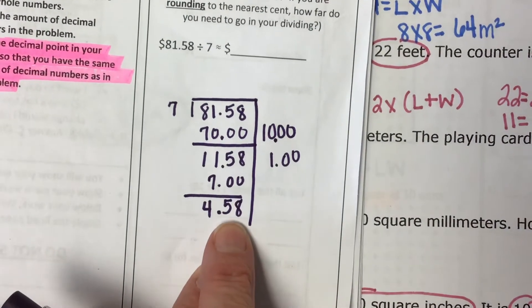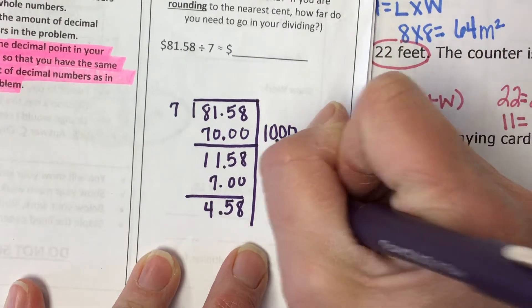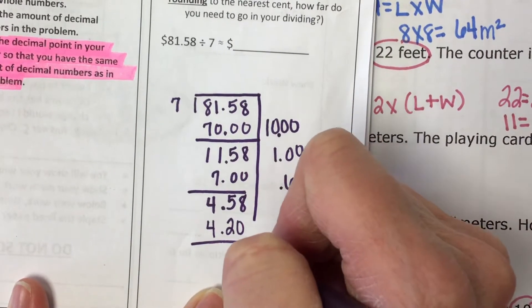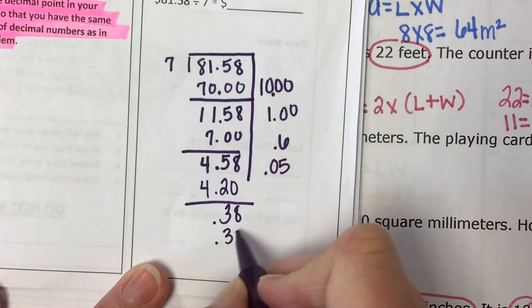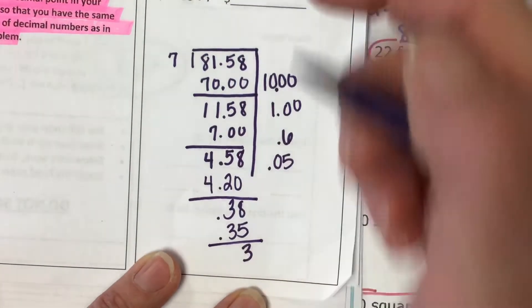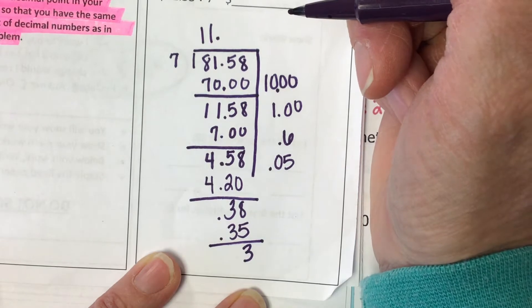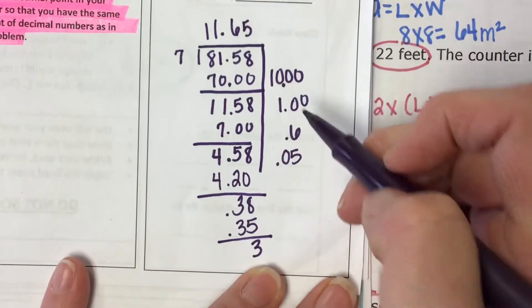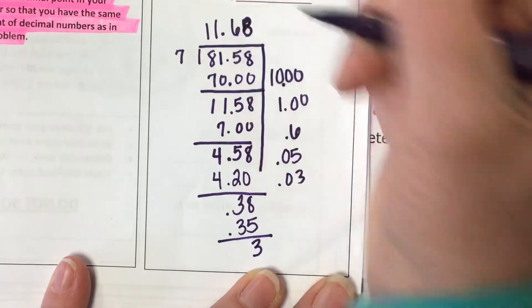And now I'm left with 458. 7 can go into 45 6 times, because 7 times 6 is 42. And I'm down to 38 cents, 7 can go in there 5 times. And that is going to leave me with 3 cents. So when I add together my partial quotients, I am ending up with 11 dollars and 65 cents. This would leave me with another .03, so it should be 68 cents. 11 dollars and 68 cents.